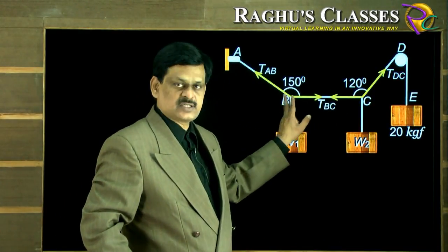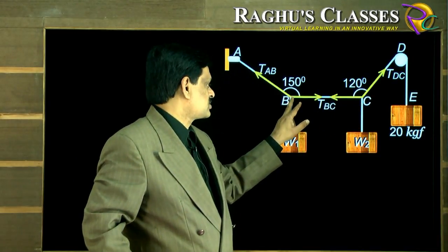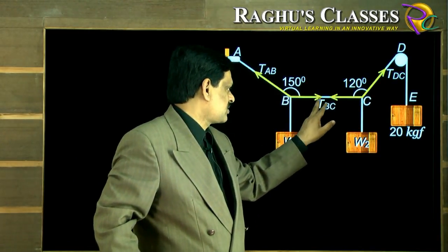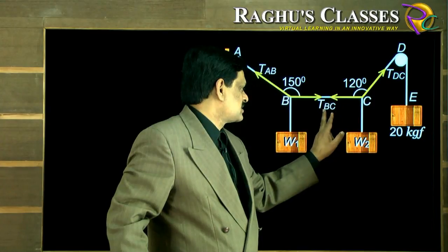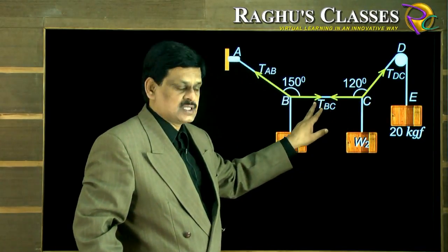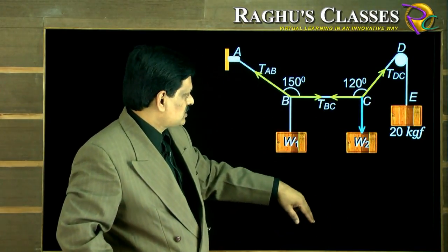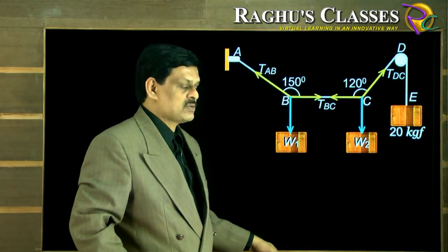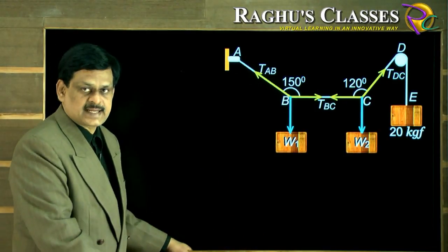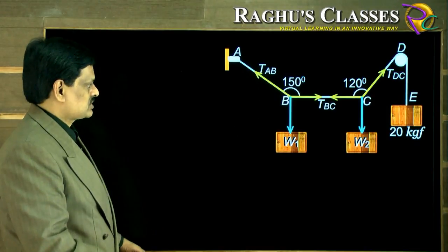TBC is the tension in BC. For this junction, tension BC has to be taken to the right; for this junction, tension BC has to be taken to the left. Here the weight W2 is acting down, here weight W1 is acting down. So these are the forces acting and their directions at the two junctions.